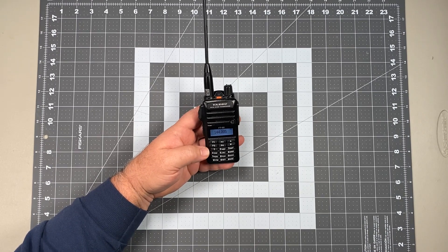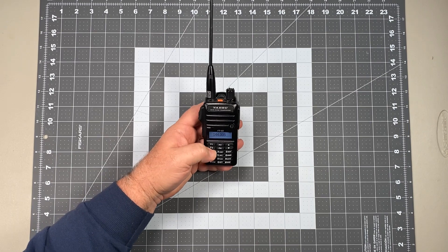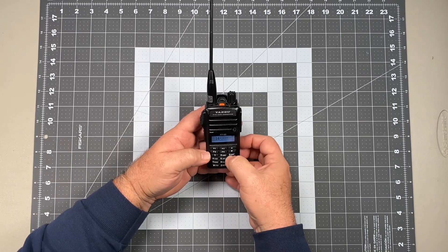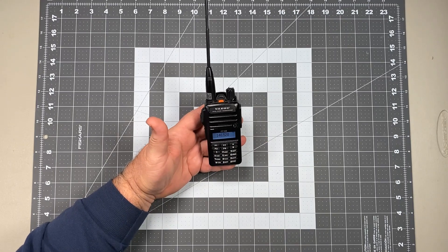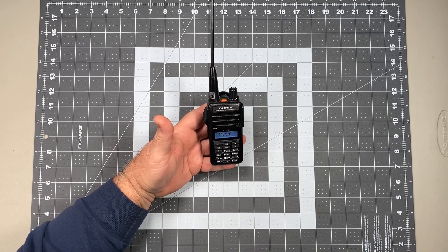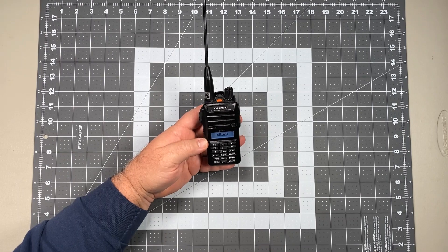So this is going to be the VHF National Calling Frequency, the 146.520. So we've got that programmed in. We could, if we wanted to, we could talk on that frequency at this point.